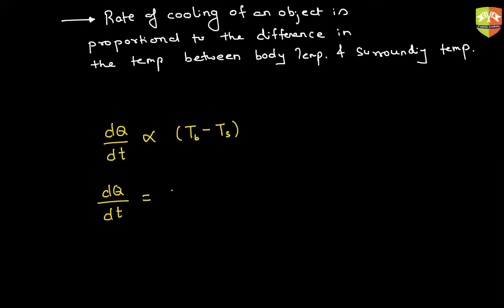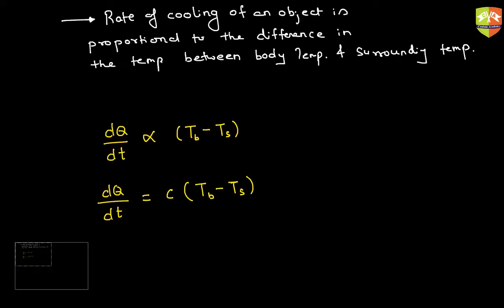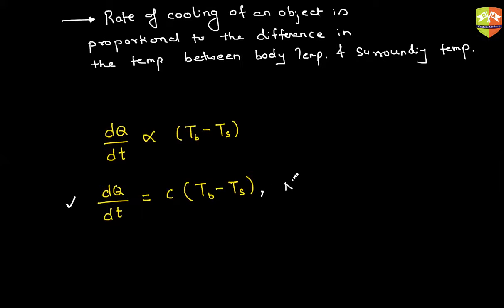So DQ/DT equals some constant C times TB minus TS. Please write this down: the rate at which the object is cooling equals C times (TB minus TS). This is what Newton told us before Stefan-Boltzmann, and it is called Newton's Law of Cooling.